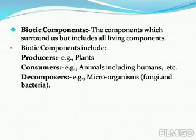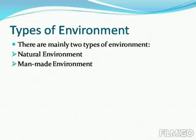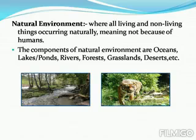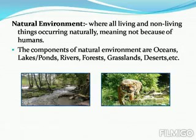Now, types of environment. There are mainly two types of environment: natural environment and man-made environment. Natural environment is where all living and non-living things occur naturally, meaning not because of humans. Examples include oceans, forests, grasslands, deserts, lakes, ponds, etc.